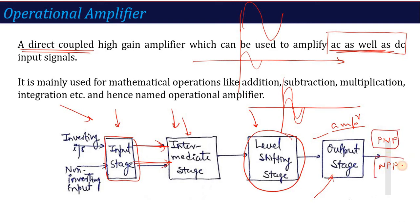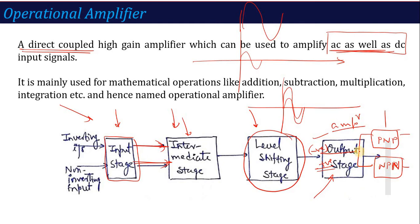Once the signal comes through the level shifting stage, there is another amplifier stage — the output stage — which completes the amplification of AC as well as DC. For AC, there are both positive and negative halves. The output stage is basically a combination of PNP and NPN transistors: when the negative half comes, the PNP transistor operates and we get the output; when the positive half comes, it is amplified by the NPN transistor. This is why the output stage is called a push-pull amplifier.